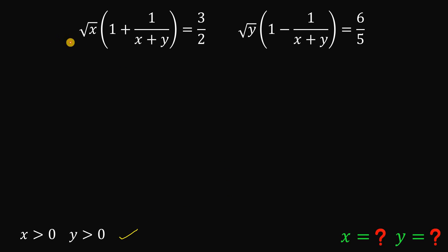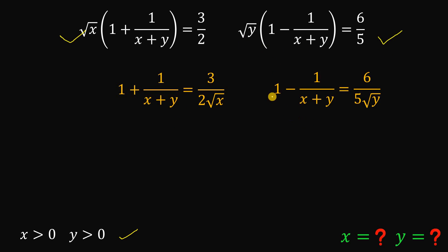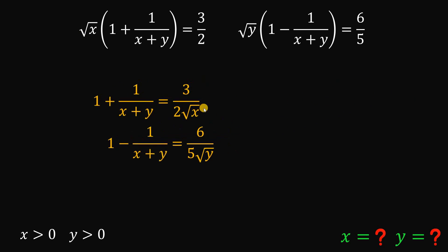Now, taking the first equation, we divide both sides by square root of x. And for the second equation, we divide both sides by square root of y, giving us 1 minus 1 over (x plus y) equals 6 over (5 times square root of y). We will now use these two results.